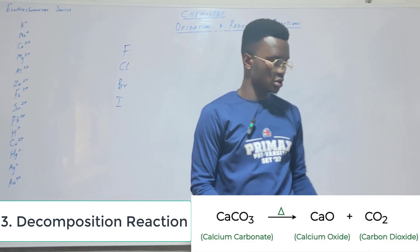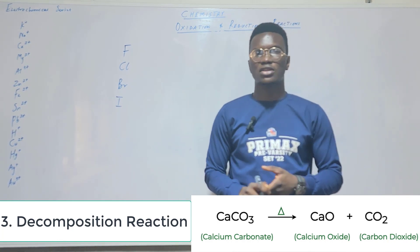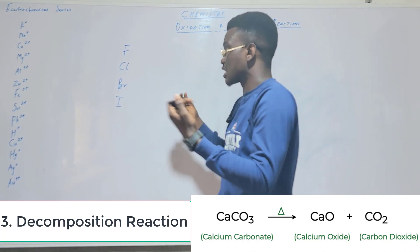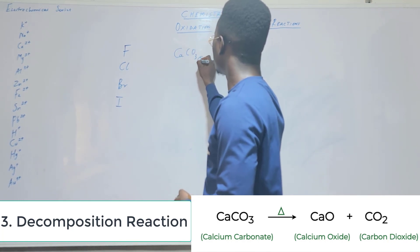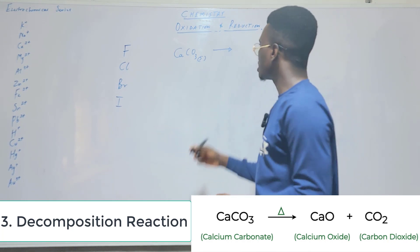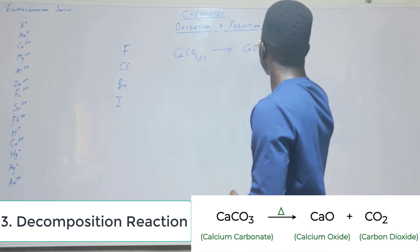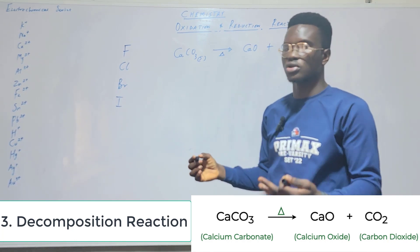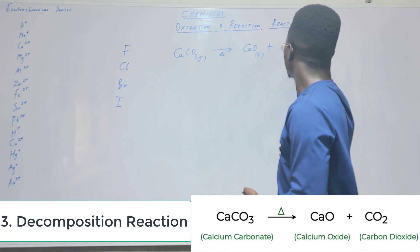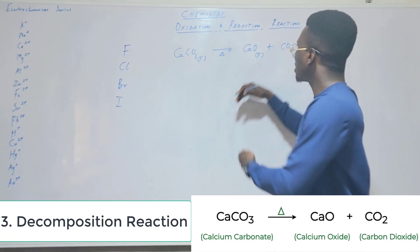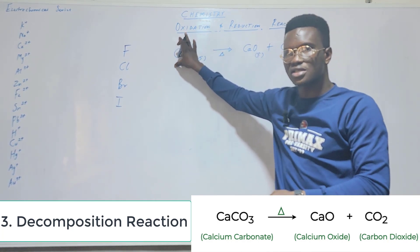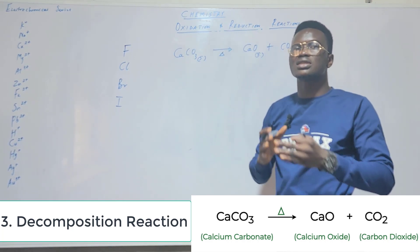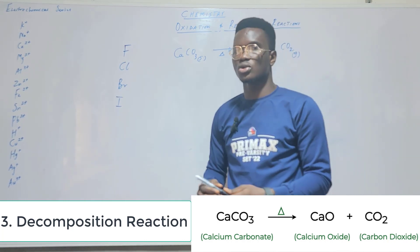Another form is decomposition reaction, which is the opposite of combination. A compound splits to give two or more products. For example, CaCO₃ (solid) decomposes to give CaO plus CO₂. So when you combine substances to give a single product, it's combination; when a single substance gives two or more products, it's decomposition.